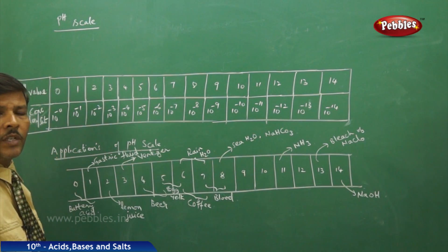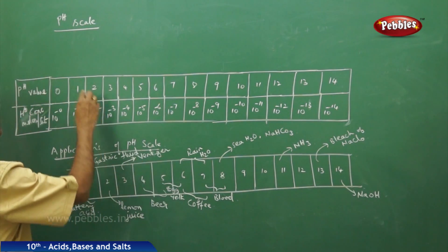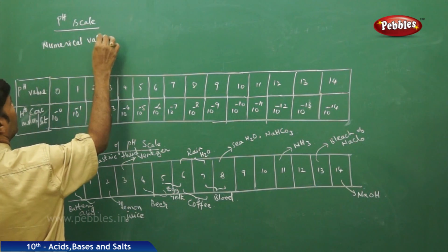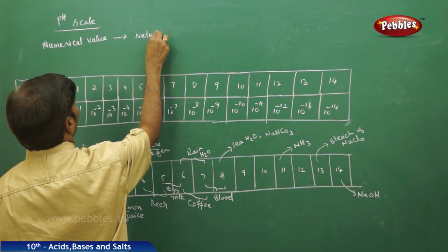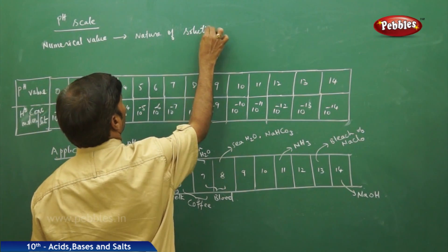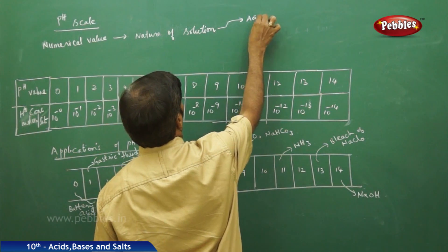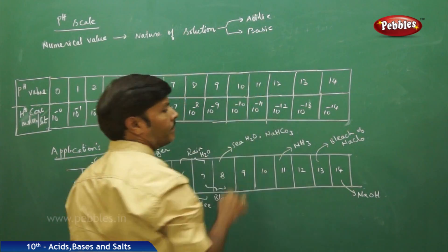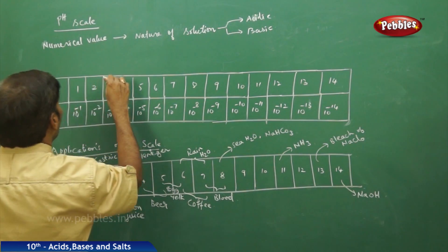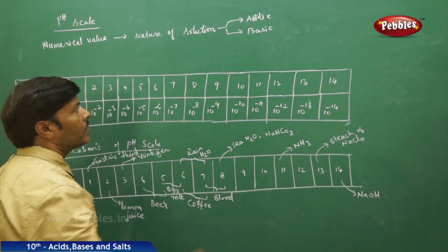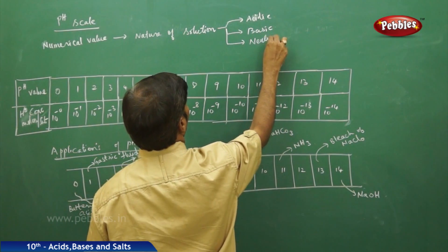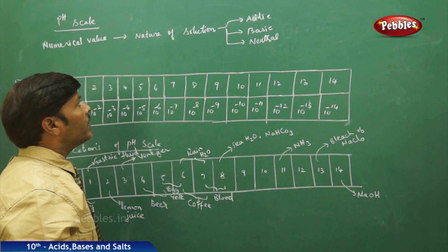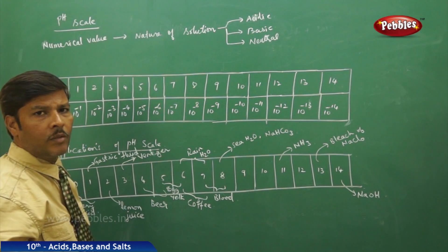The next part of the discussion is the pH scale. The pH scale is a numerical value which gives the nature of a solution — whether the solution is acidic, basic, or neutral in nature.